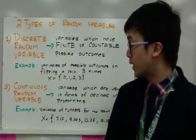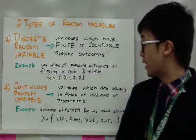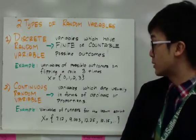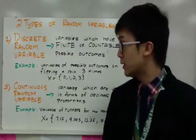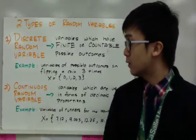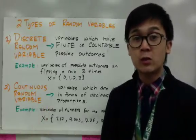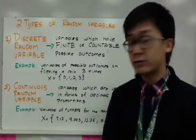Now, continuous random variable by definition is variables which are usually in forms of decimals or proportions. So this time, the random variables that we're using is no longer finite because it involves decimals.